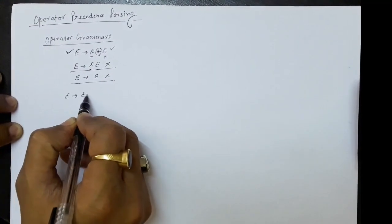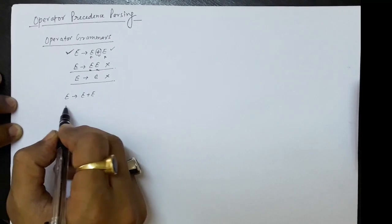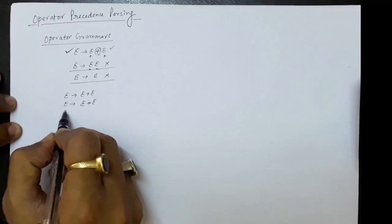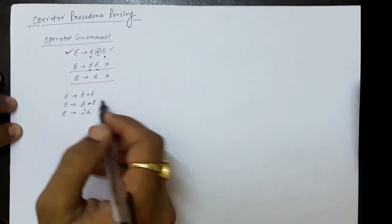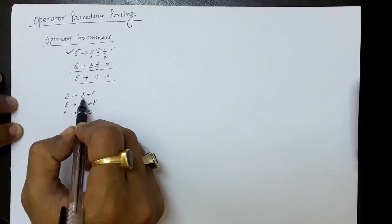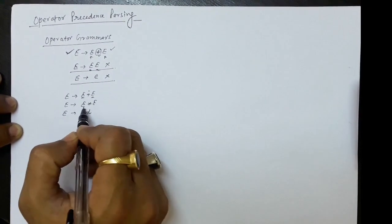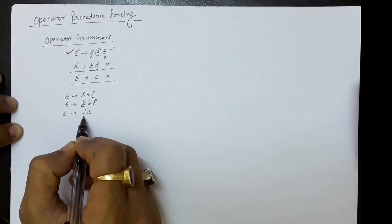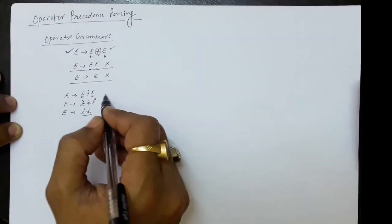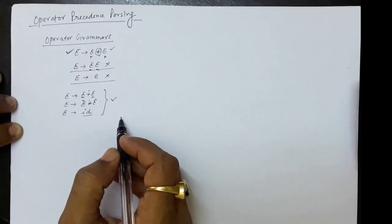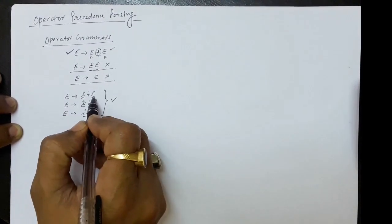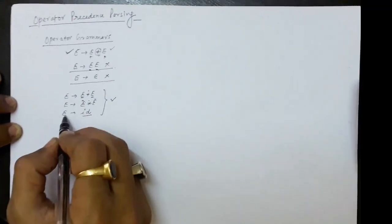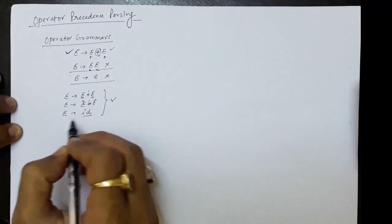Let us take an example: E → E plus E, E → E star E, and E → id. In the first two productions there are non-terminals with a terminal in between, and the third production has only a terminal. This grammar is an operator grammar because it satisfies the rule that between any two non-terminals there must be a terminal symbol, and terminals-only productions are also acceptable.